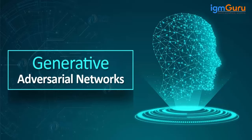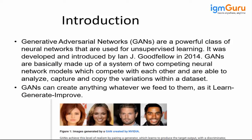Now let's look at another architecture: the GAN architecture. GAN stands for Generative Adversarial Network. GAN architecture is part of the deep learning architectures which use unsupervised learning to generate data. This architecture was introduced by Ian Goodfellow in 2014, and in the GAN architecture we use two different architectures. The real use case of the GAN architecture is to generate images.